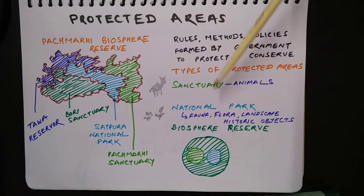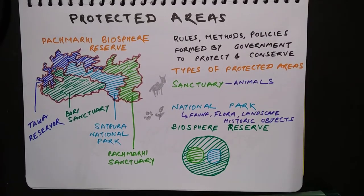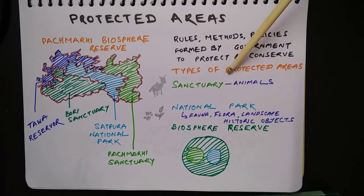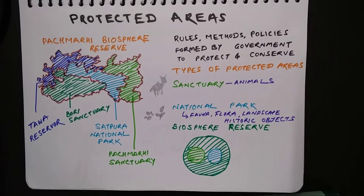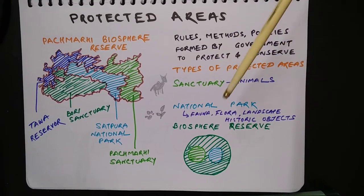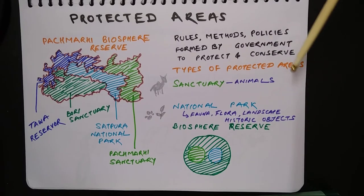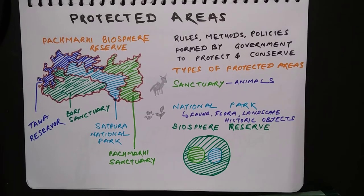There are three types of protected areas: sanctuary, national park, and biosphere reserve. A sanctuary is an area where only animals get protection — the keyword is animals. A national park is an area where, apart from animals (fauna), plants (flora) also get protection. In addition, the landscape of that area and historic objects of that area are all protected in a national park.